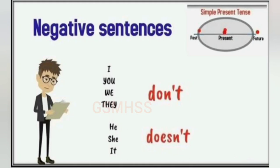The short form of 'does not' is 'doesn't'. The examples we saw in today's class are in the present tense, so we use 'do not' and 'does not'. Remember: if the sentences are in the past tense, you have to use the word 'did not'. Thank you.